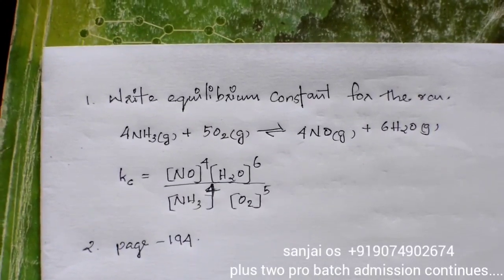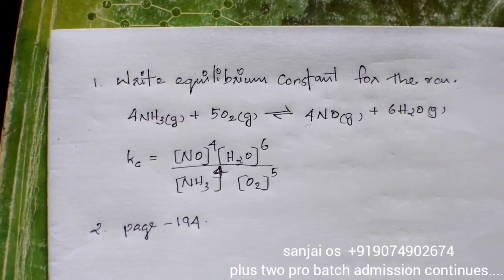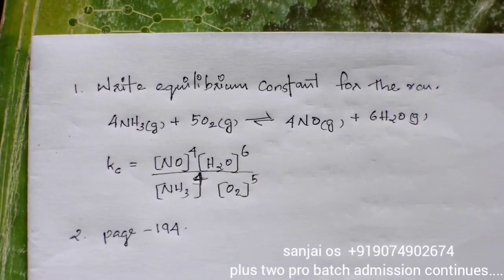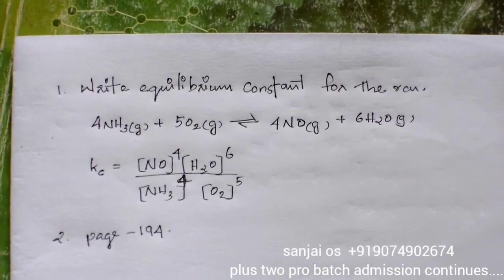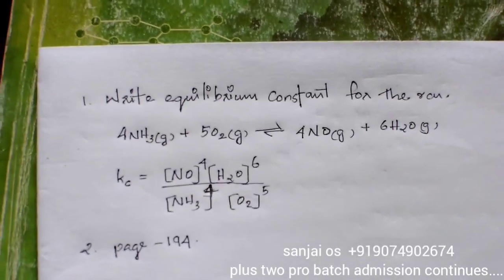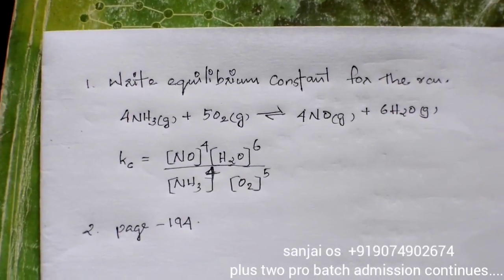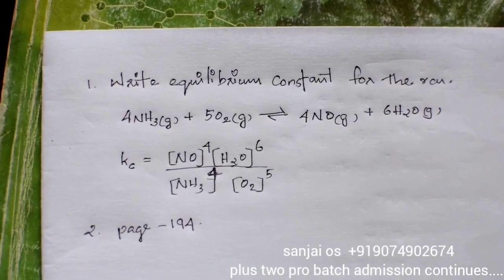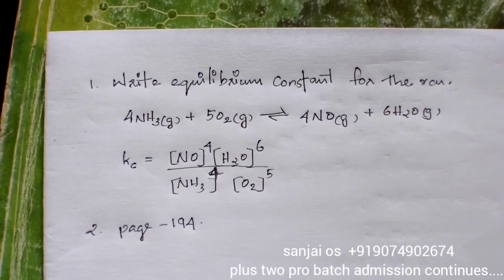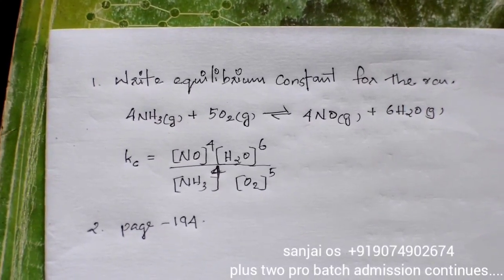Write the equilibrium constant for the reaction: 4NH₃ (g) + 5O₂ (g) ⇌ 4NO (g) + 6H₂O (g).